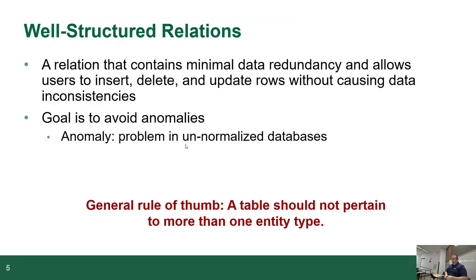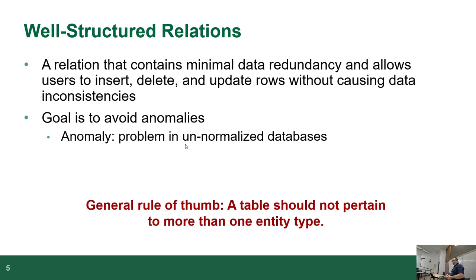To talk about anomalies, we need to understand what a well-structured relation is first. By relation, I don't mean a relationship — a relation is synonymous with an entity or a table. When you go from an entity, it turns into a relation, which turns into a table. They're all essentially the same thing at just different stages in its life cycle. A well-structured relation contains the minimal amount of data redundancy and allows users to insert, delete, and update rows without causing any kinds of inconsistency. The goal is to avoid anomalies.